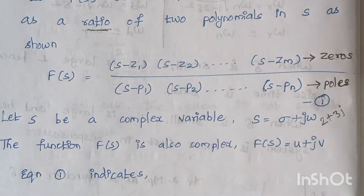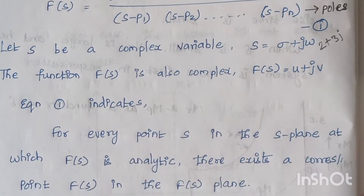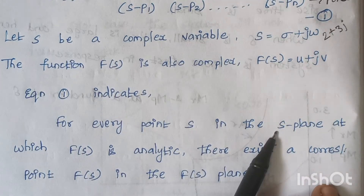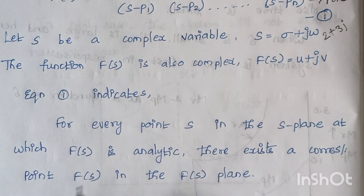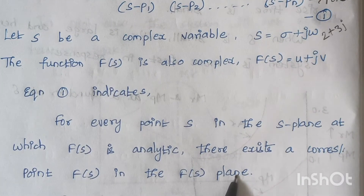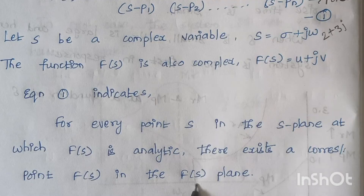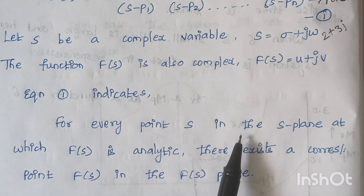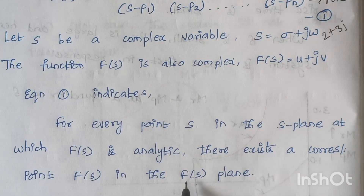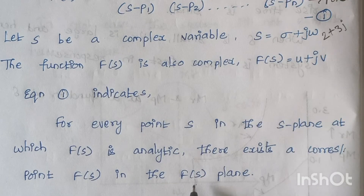For every point s in the s-plane, there exists a corresponding point f of s in the f of s plane. That is, we are having two planes — an s plane and an f of s plane. For every point in the s plane there is a corresponding point in the f of s plane. For example, if the s plane has two points then the f of s plane will also have two points.